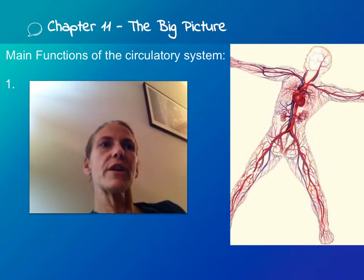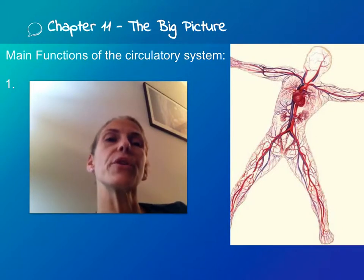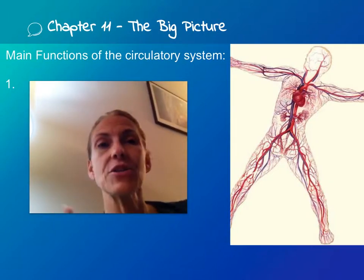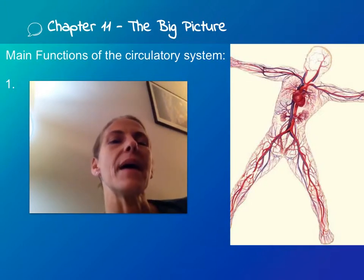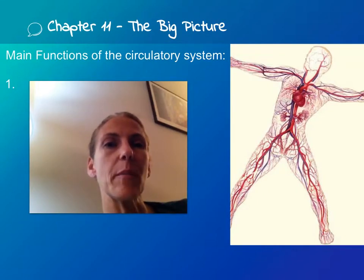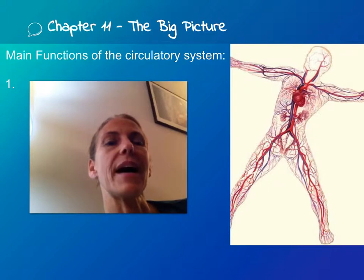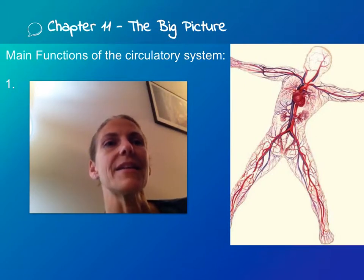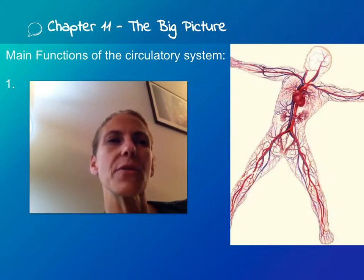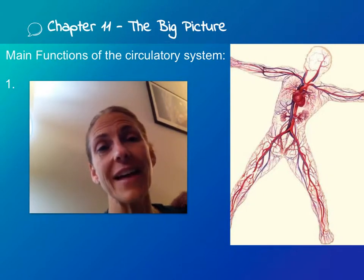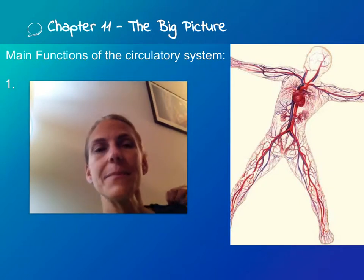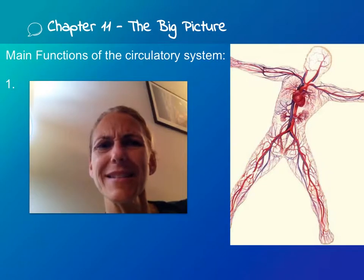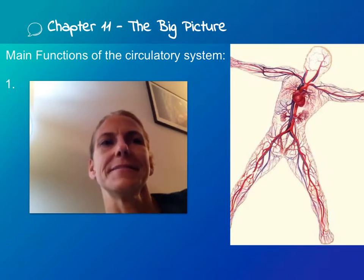Switching over to the circulatory system — its main function is to deliver nutrients and export waste. It also delivers hormones, enabling chemical signaling between body parts. It distributes antibodies to fight infections, transports heat generated by muscles throughout the body, and provides oxygen needed for making energy.